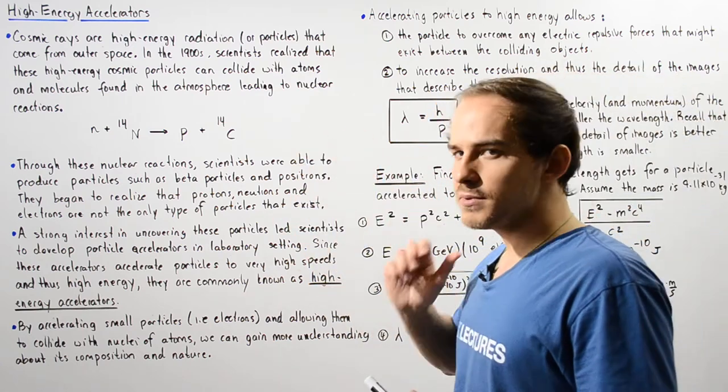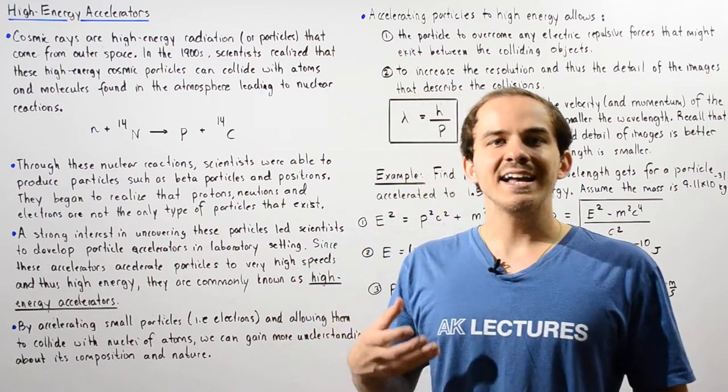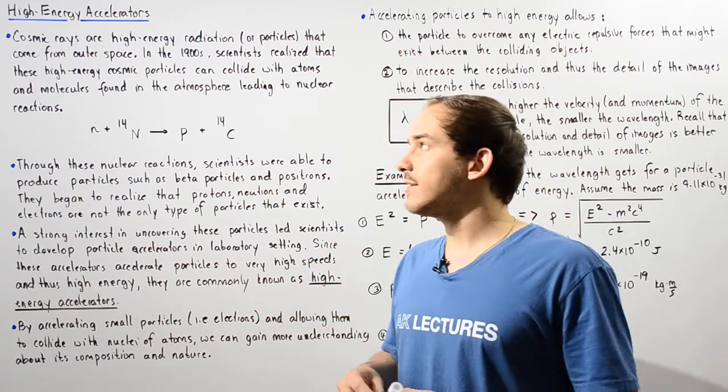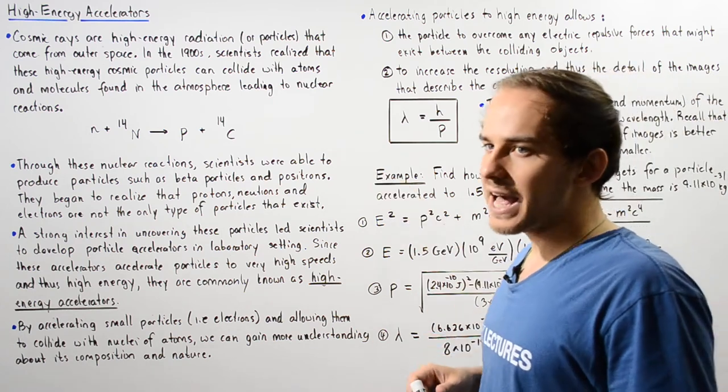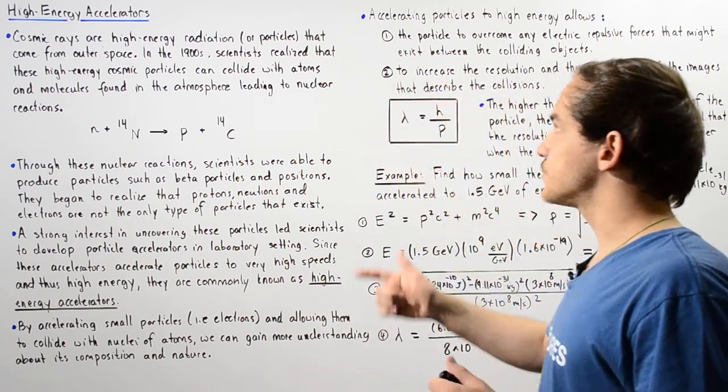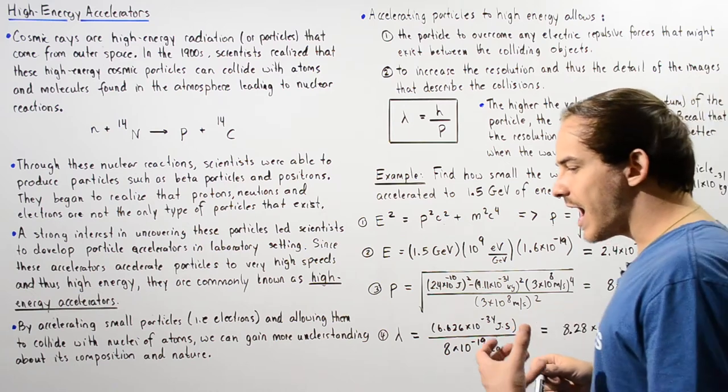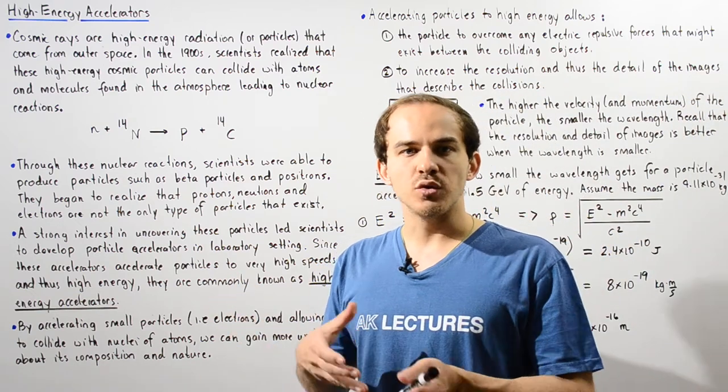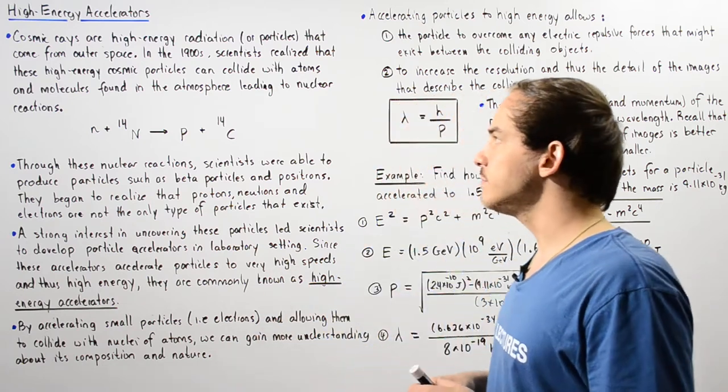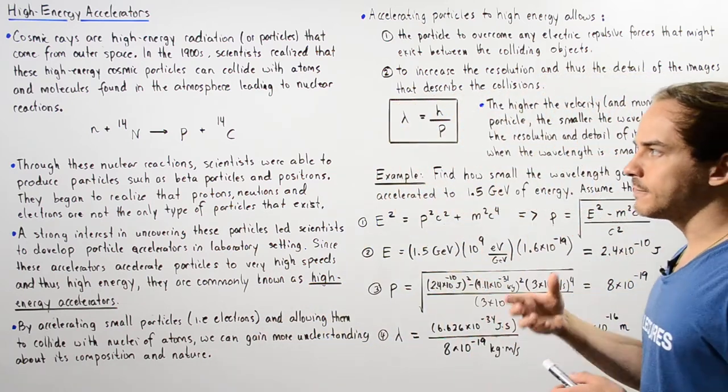Cosmic rays are basically high-energy rays or high-energy particles that come from outer space. In the 1900s, scientists realized that these high-energy particles can collide with the molecules and atoms found in the atmosphere, producing different types of things.